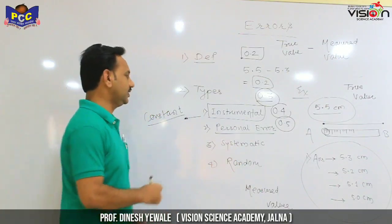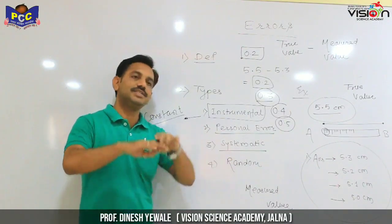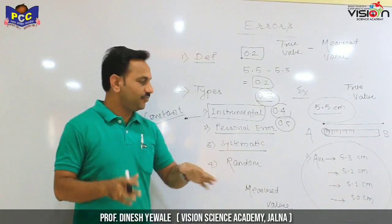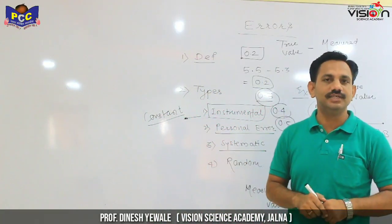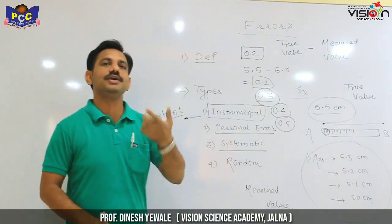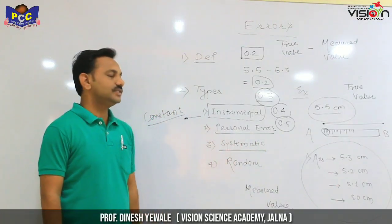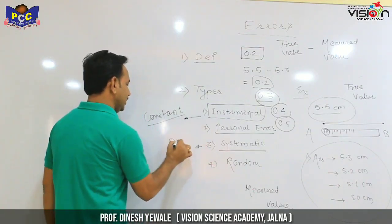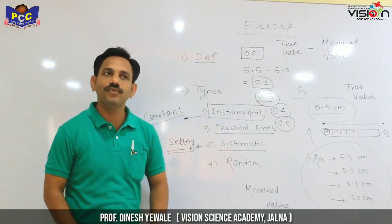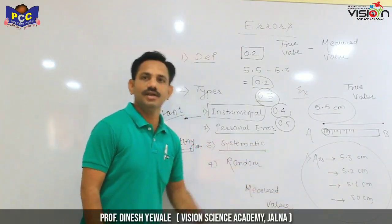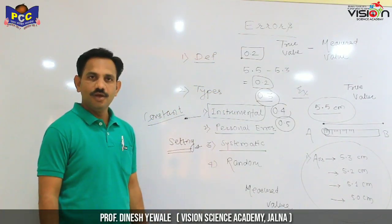Next is systematic error. The third type is systematic error. What is systematic error? The instrument is faulty — the device setting is wrong. The wrong setting causes the error. The error produced by wrong settings is called systematic error.